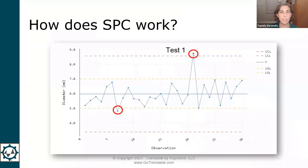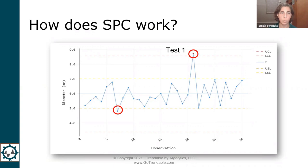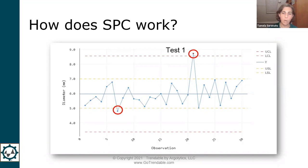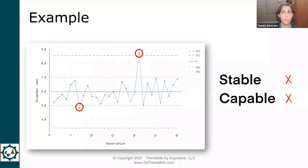How does SPC actually work in practice? Tonight I want to focus on one of the simplest and most common SPC tools: control charting. These charts help you visualize the stability of the process. Stable processes show up on a control chart as a series of random points with no trends and no outliers.